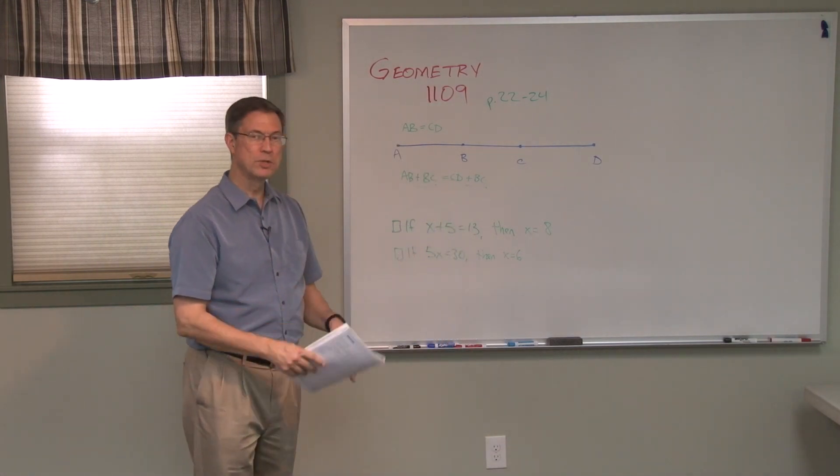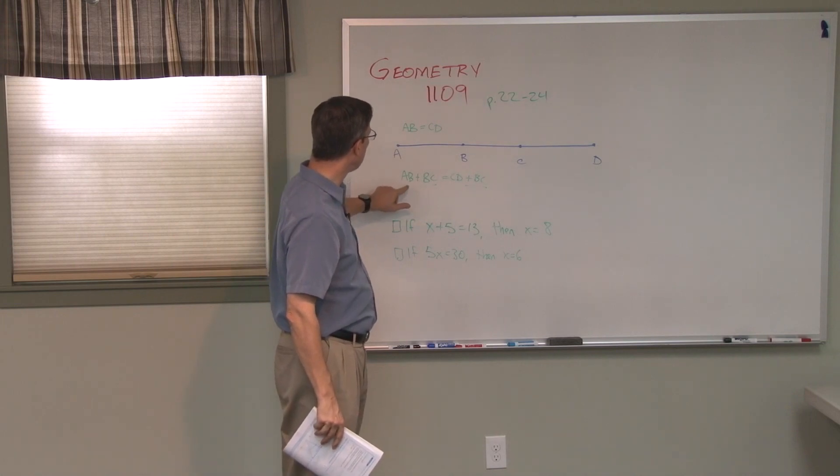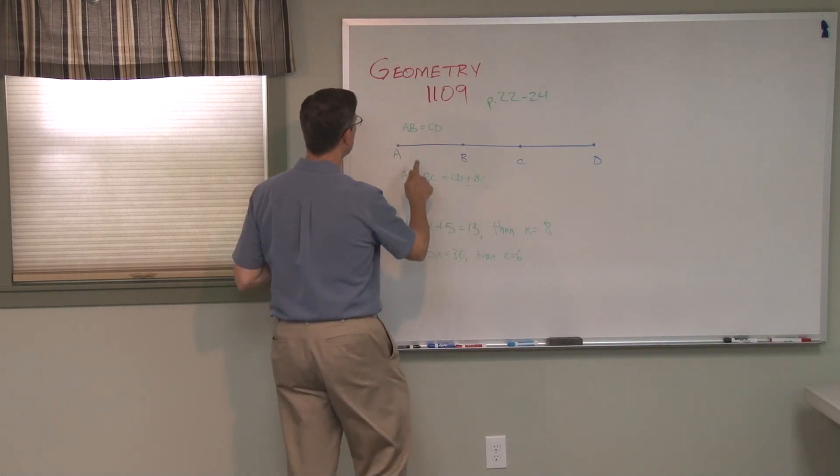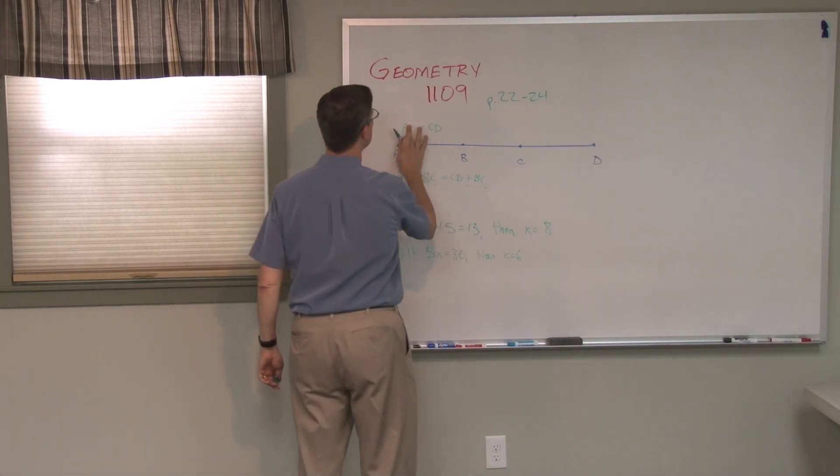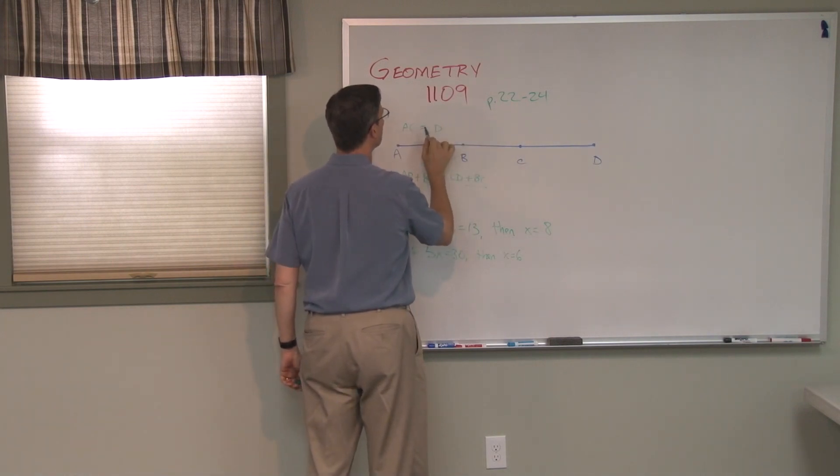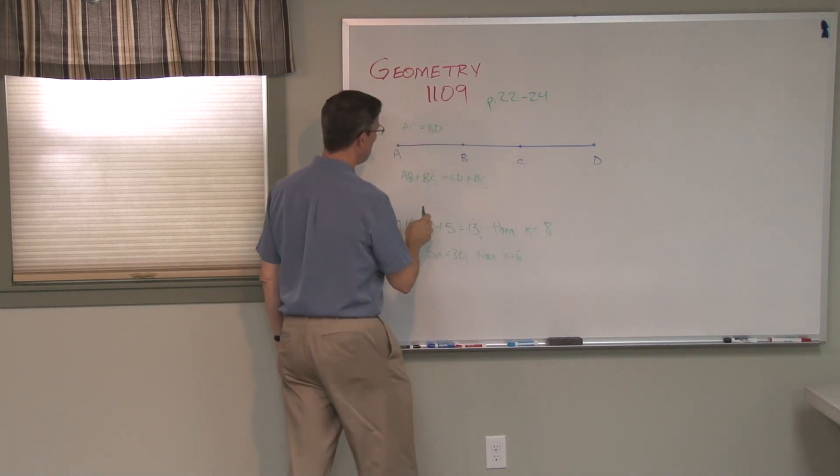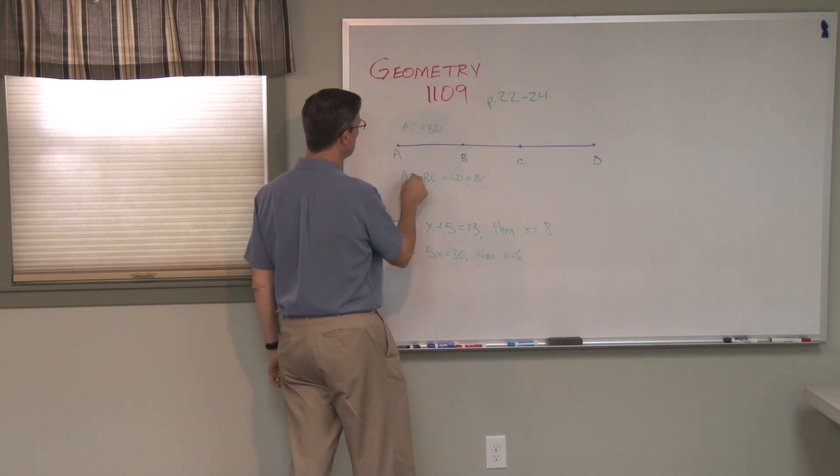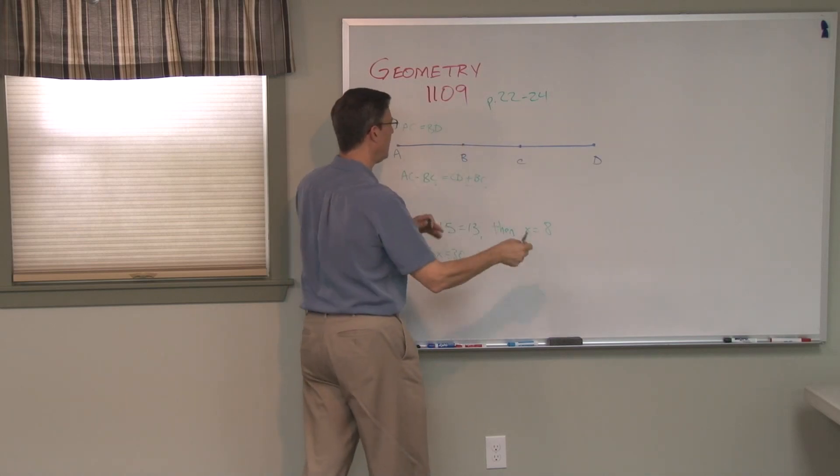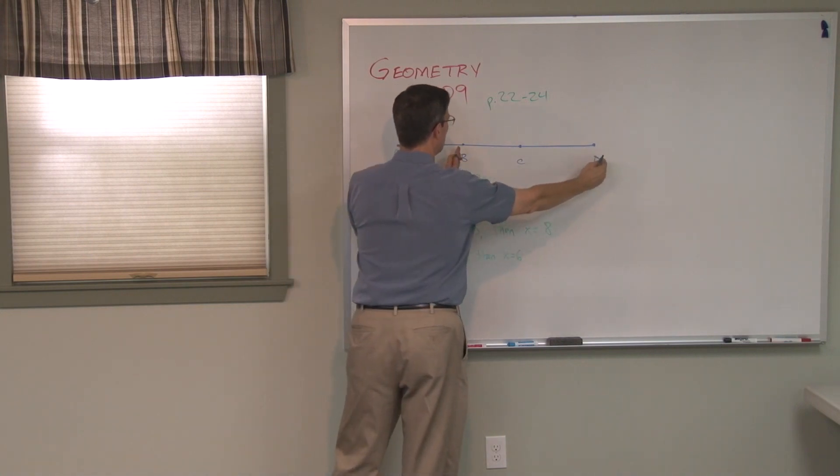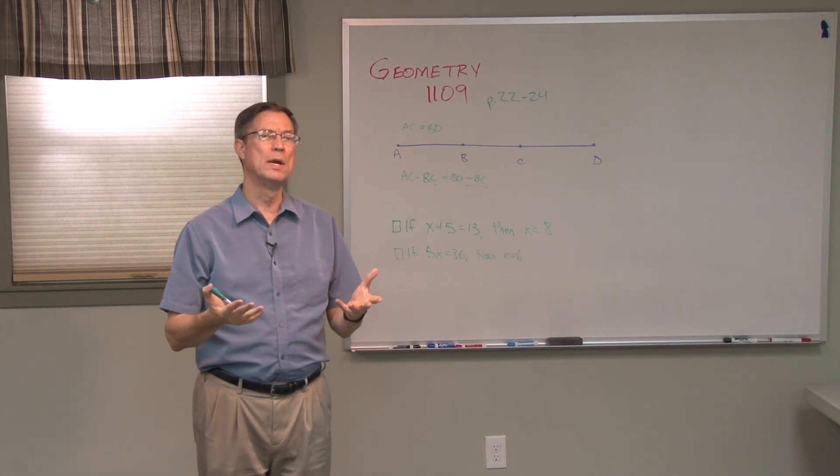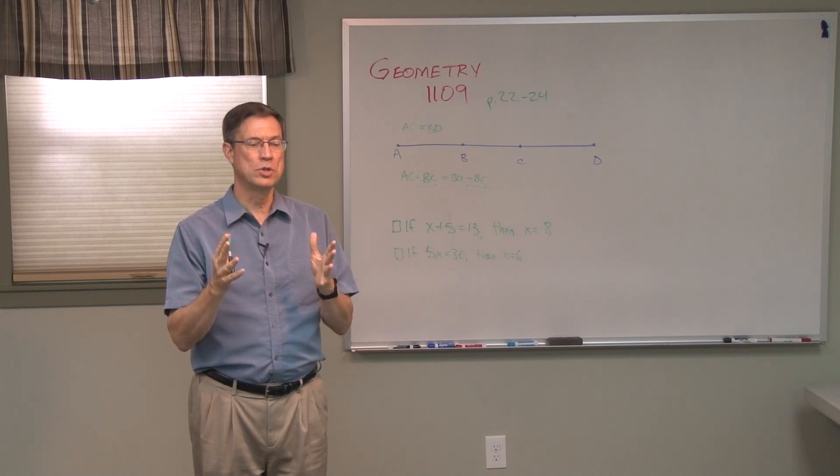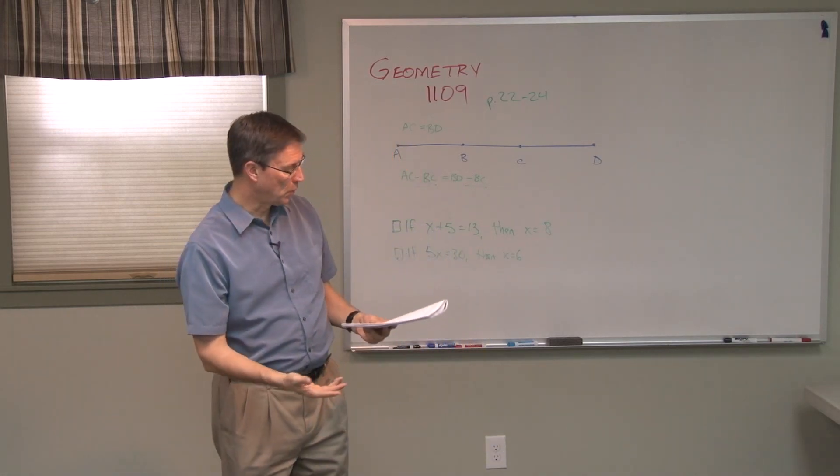So then we look at subtraction, and now we're kind of starting here and saying, if I started here and said AC is equal to BD, then that would be the same as saying AC, and then take away BC, pull that right out. And over here, I'll say BD minus, so this whole thing, but take out this piece. So again, just like algebra, but instead of taking away a number from both sides, we're taking away a shape, a line segment. It can be done with angles as well.